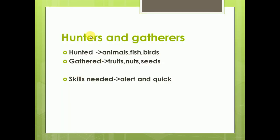These early men were hunters and gatherers. Their food sources were animals as well as plant products — they hunted animals, fish, and birds, and gathered fruits, nuts, and seeds. Animals are very fast and strong, so special skills were needed to catch them. Early people had to be very alert and quick. Plant products were also seasonal, with some plants bearing fruit only in a particular season.